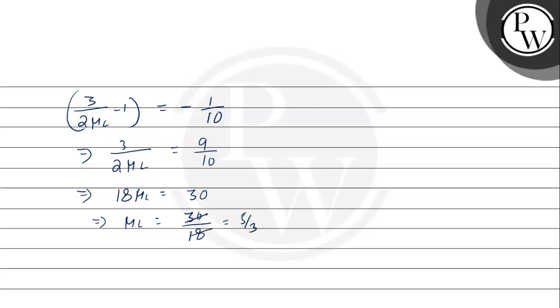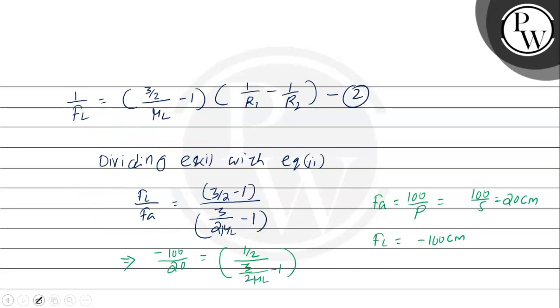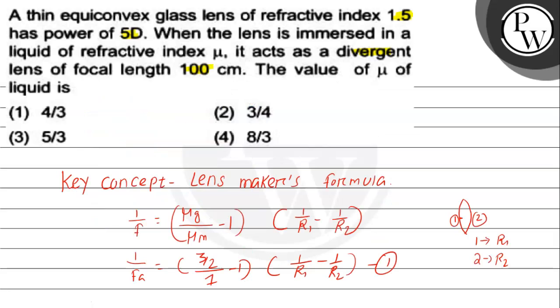So our correct answer is 5 by 3. Hence the correct answer is option 3, that is 5 by 3. Hope you understood it well, best of luck.